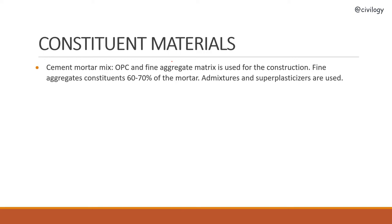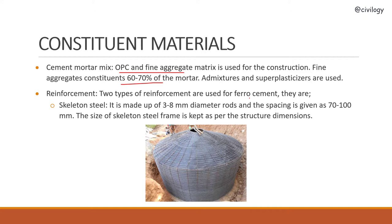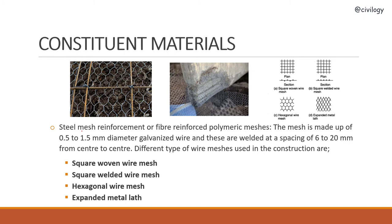Next, constituent materials. We use mainly two materials: cement mortar mix and reinforcement. For the cement mortar mix, OPC and fine aggregate matrix is used. Fine aggregate constitutes 60 to 70 percent; water, admixtures, and superplasticizers are also used. For reinforcement, two types are used in ferrocement. Skeleton steel is made up of 3 to 8 mm diameter rods with spacing of 70 to 100 mm, and the size of the skeleton steel frame is kept as per the structure dimensions. Steel mesh reinforcement or fiber reinforced polymer meshes are also used.